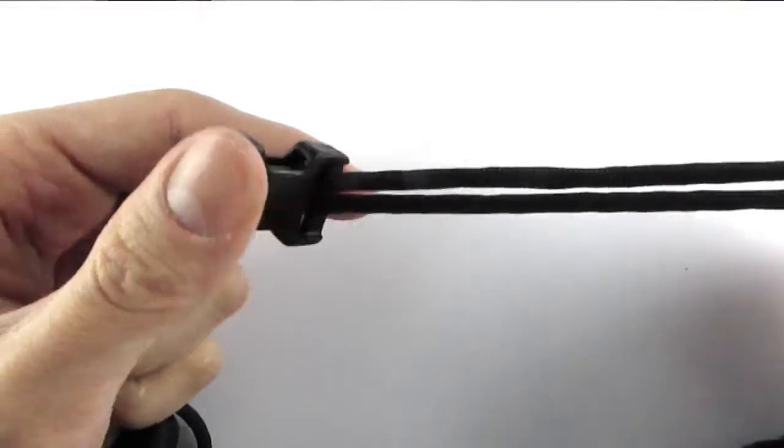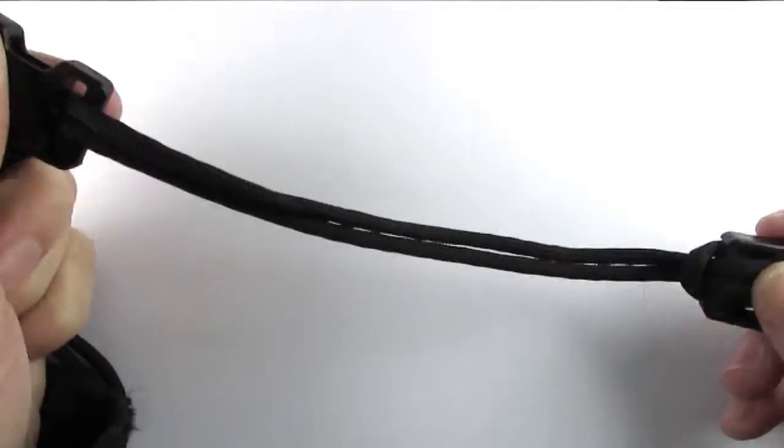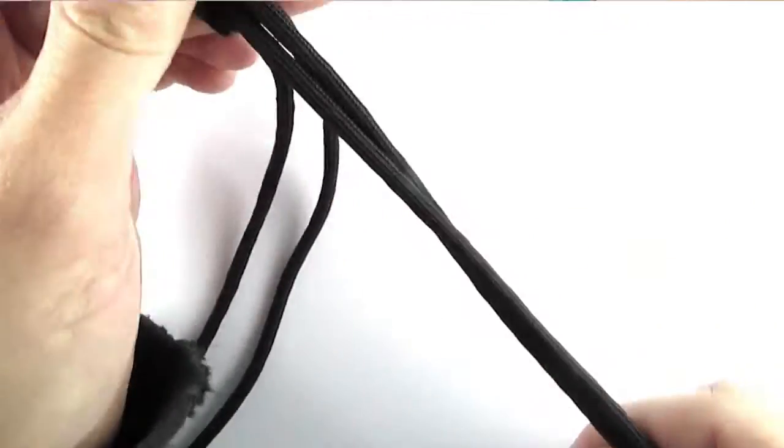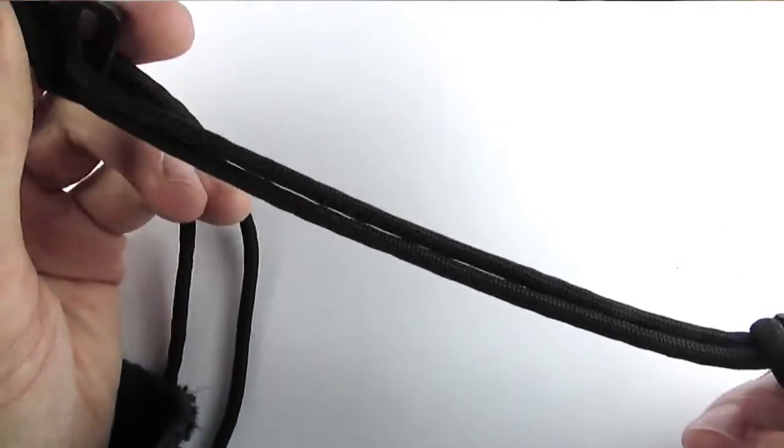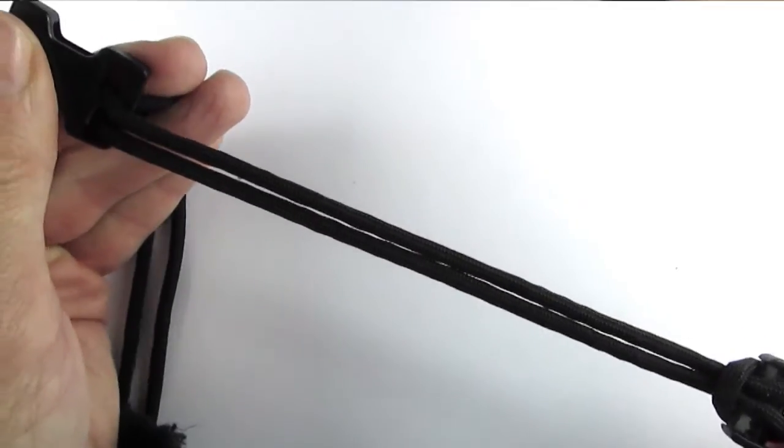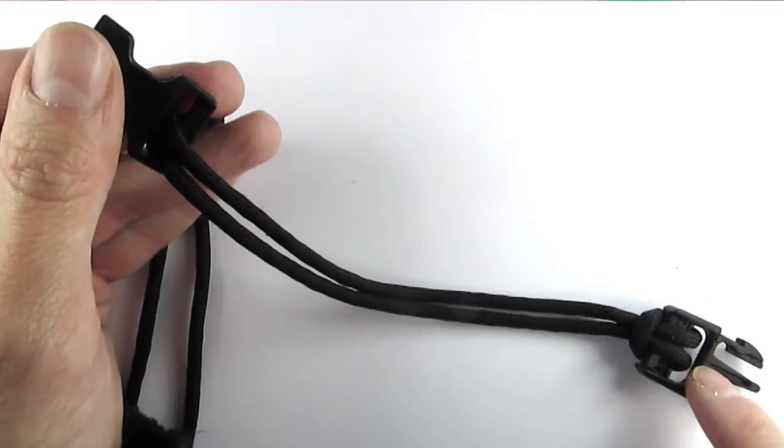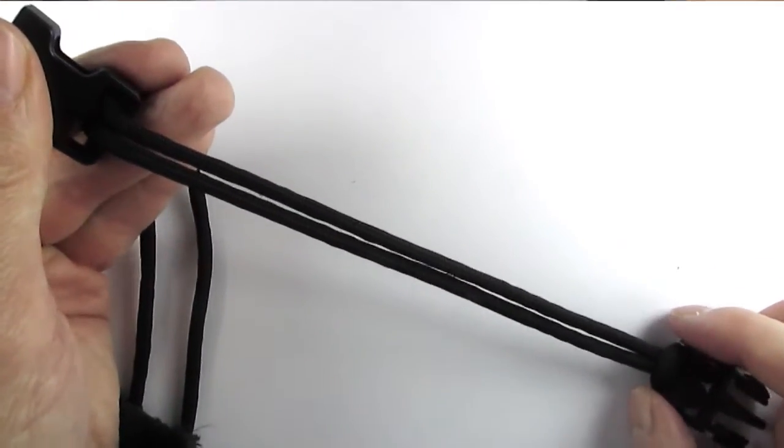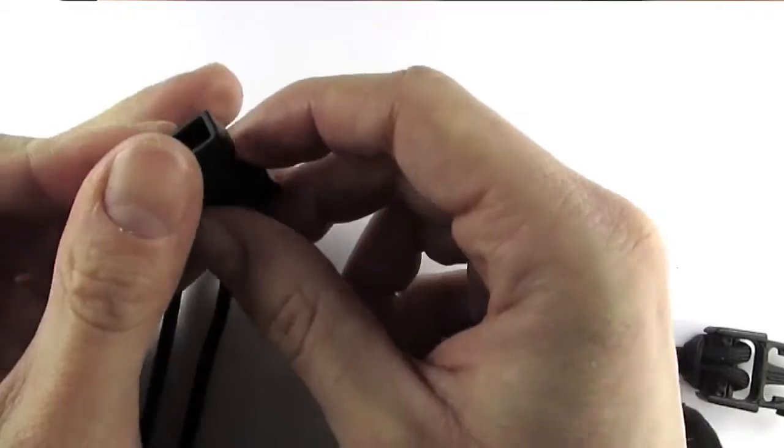Okay, so we have both sides attached and now we are going to start our tying process. These are the two cords. Make sure that this distance between your buckle parts is the distance you want for your bracelet.